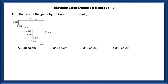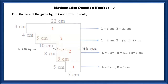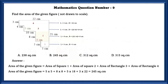Mathematics question number 9. Find the area of the given figure, not drawn to scale. First, we can divide this into squares and rectangles. As we can see, there are 2 rectangles and 2 squares. Now we are going to find each rectangle and square's sides. They have asked to find the area of the given figure. The area of the given figure is equal to 245 square centimetres.